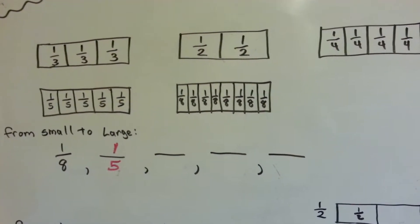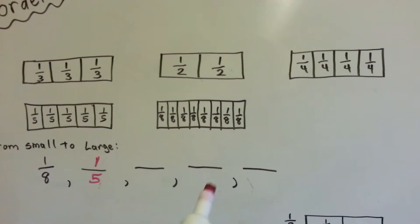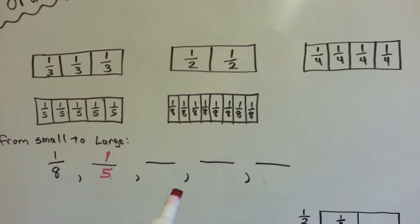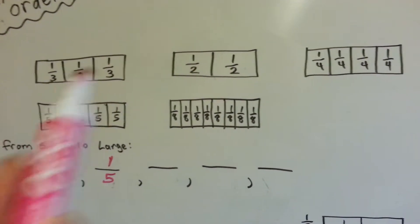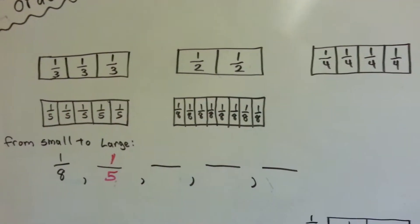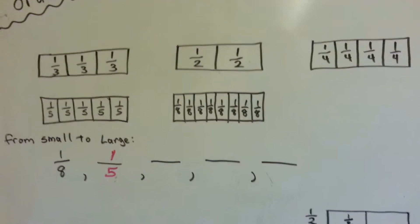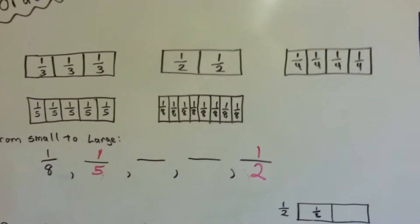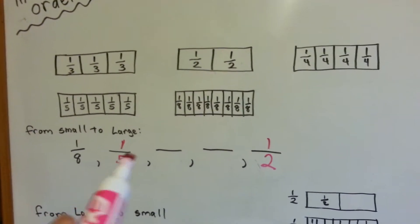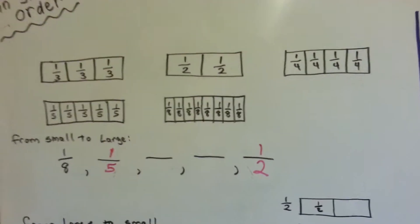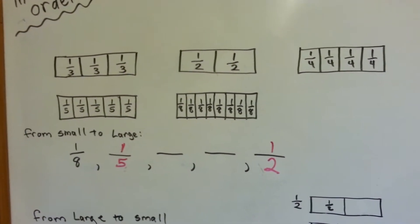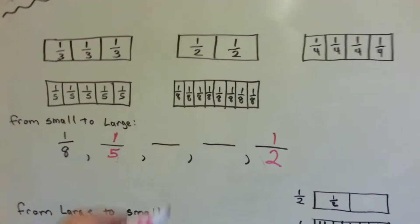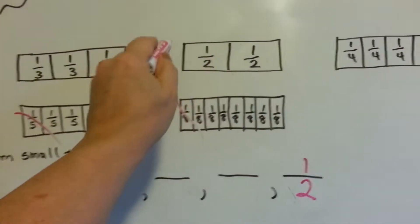What would be the next fraction? We did eighth, we did fifth. We don't need to do it in order — we can just look at this and say which of these has the biggest pieces. The half does, so we know that's going to go at the end. If it's on a piece of paper and you know the half is the last one, go ahead and put that one in to get it out of the way.